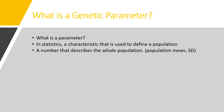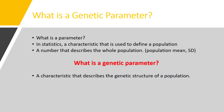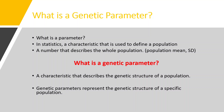Our concern is with genetic parameter. A genetic parameter can be defined as a characteristic that describes the genetic structure of a population. These genetic parameters are always estimated in a population — not on an individual animal or organism — and they always vary from one population to another. These are the general characteristics of a genetic parameter.